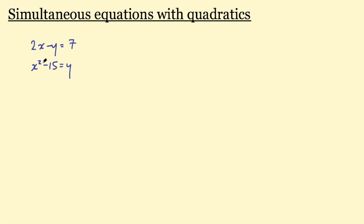You need to do these through substitution. So you take the first equation and rearrange it so that y is the subject, and then substitute it into the second equation. Generally a good rule to go by is to rearrange the equation without a squared term in it — it'll just make it simpler. You could do it the other way, but I find it easier to just rearrange the linear equation rather than the quadratic equation.